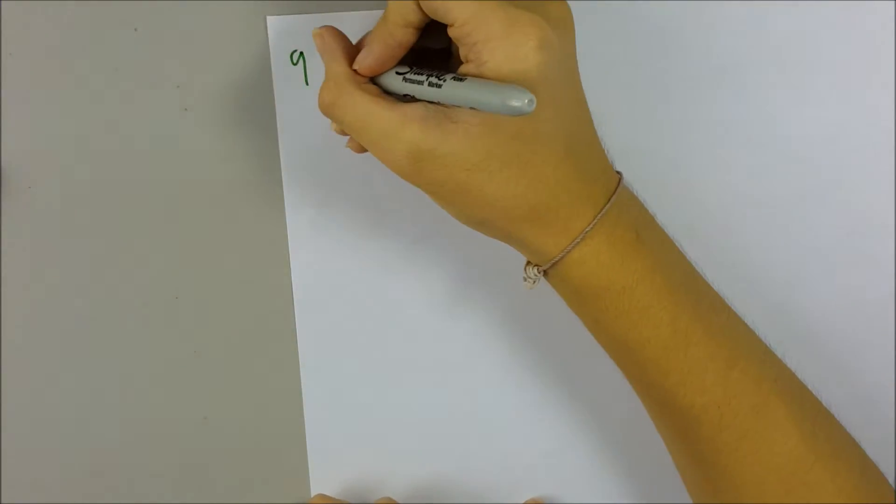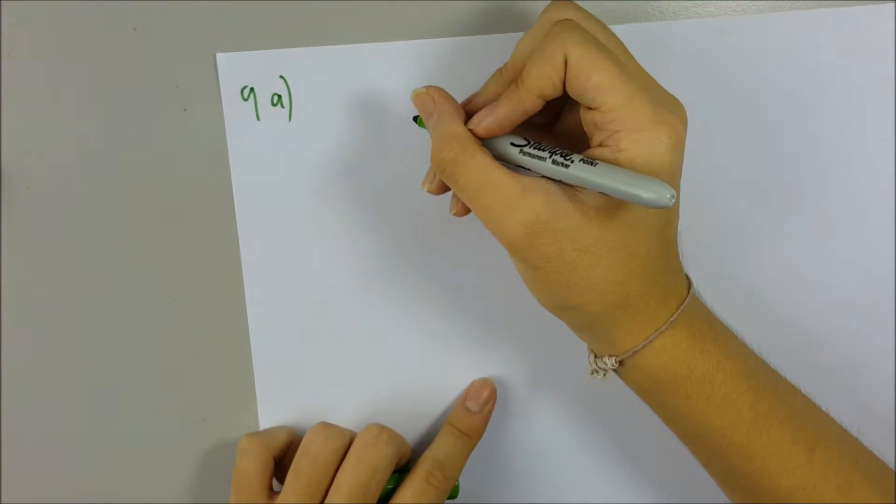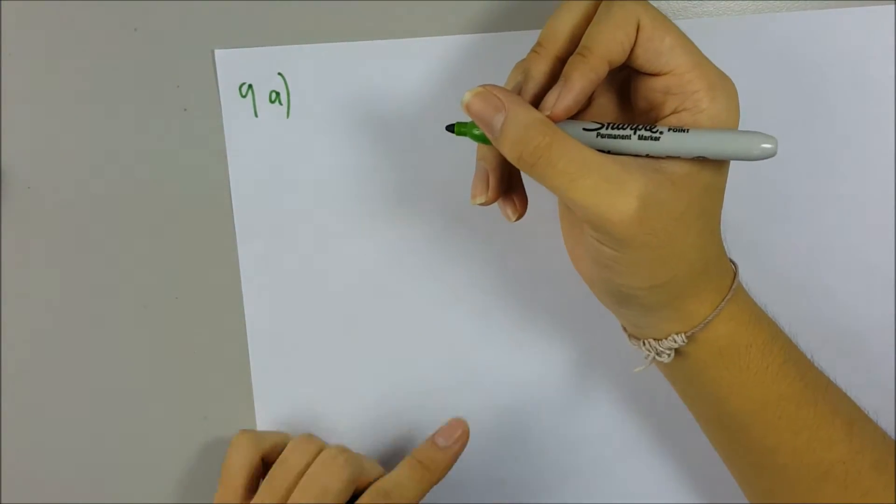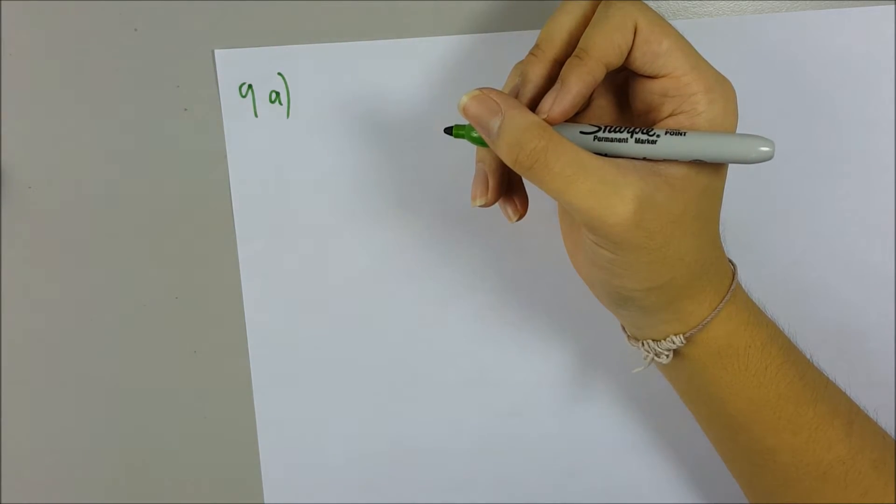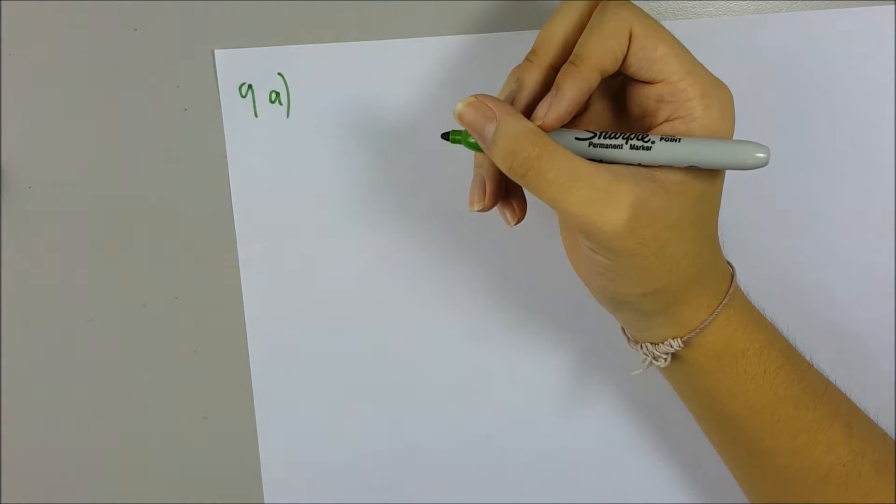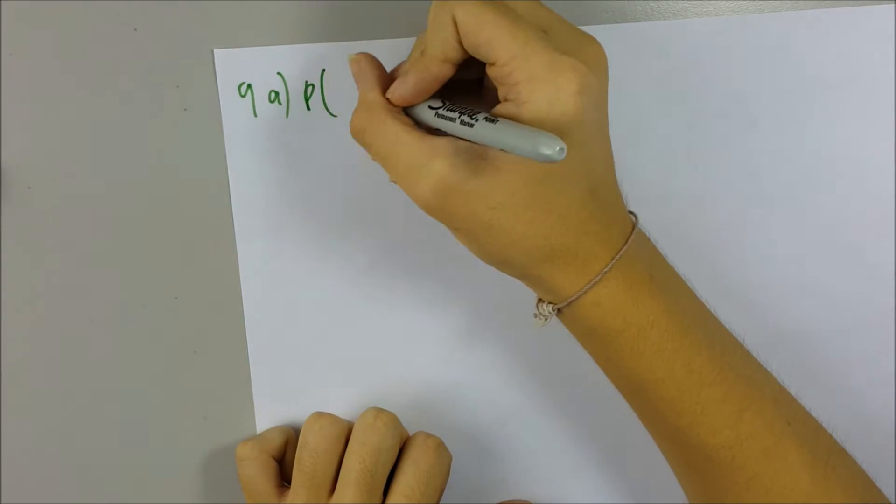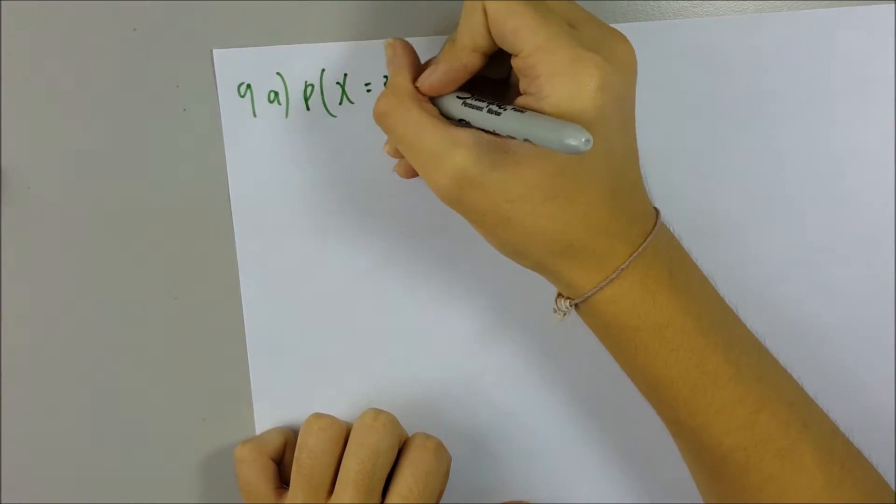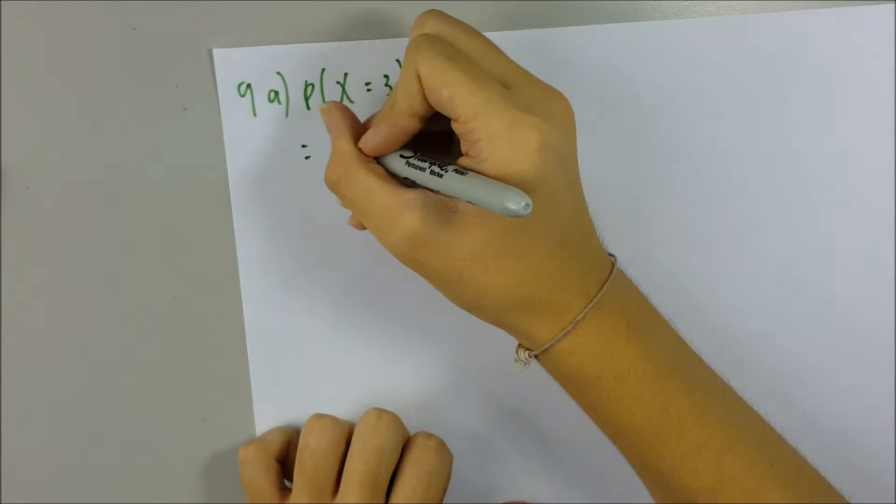Okay, so now I will be doing SPM 2016 Additional Maths Paper 2, question number 9. Question 9a asks you to find the probability of exactly three students. So P, probability of exactly three students, the total number is 8, P is 0.2, and Q is 0.8.